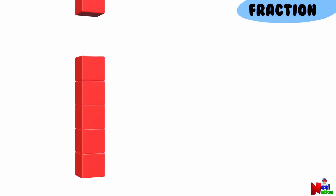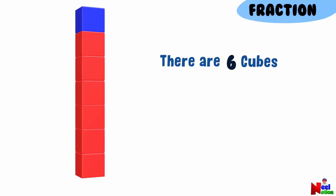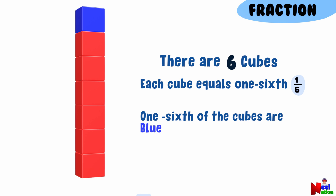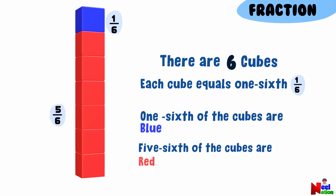You have a group of six cubes with one cube being blue and the remaining cubes being red. Each cube equals one sixth of the group. Now can you tell me what fraction of the cubes are red? What fraction of the cubes are blue? One sixth of the cubes are blue and five sixths of the cubes are red. Yes, you are right.